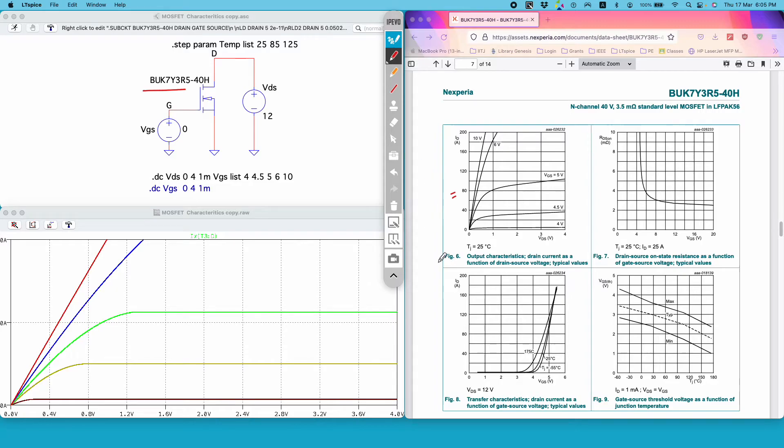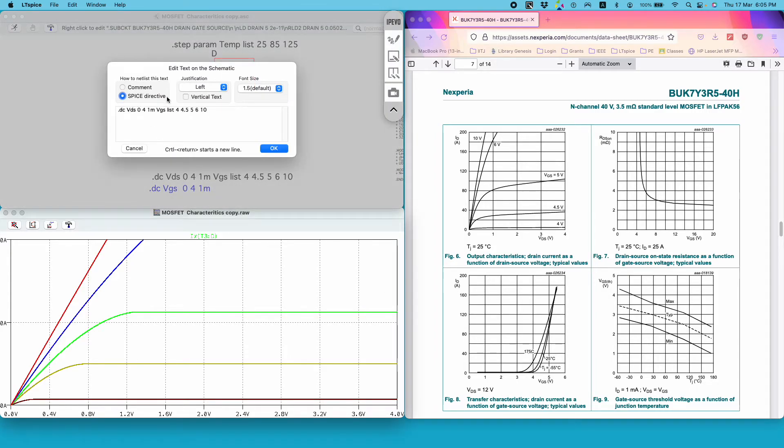Let me show you the second plot also. So this is the same plot but instead of plotting the drain current with respect to VDS, this is plotting the drain current with respect to VGS and drain to source voltage is fixed at 12 volts. So to capture this, perform the sweep only on gate to source voltage.